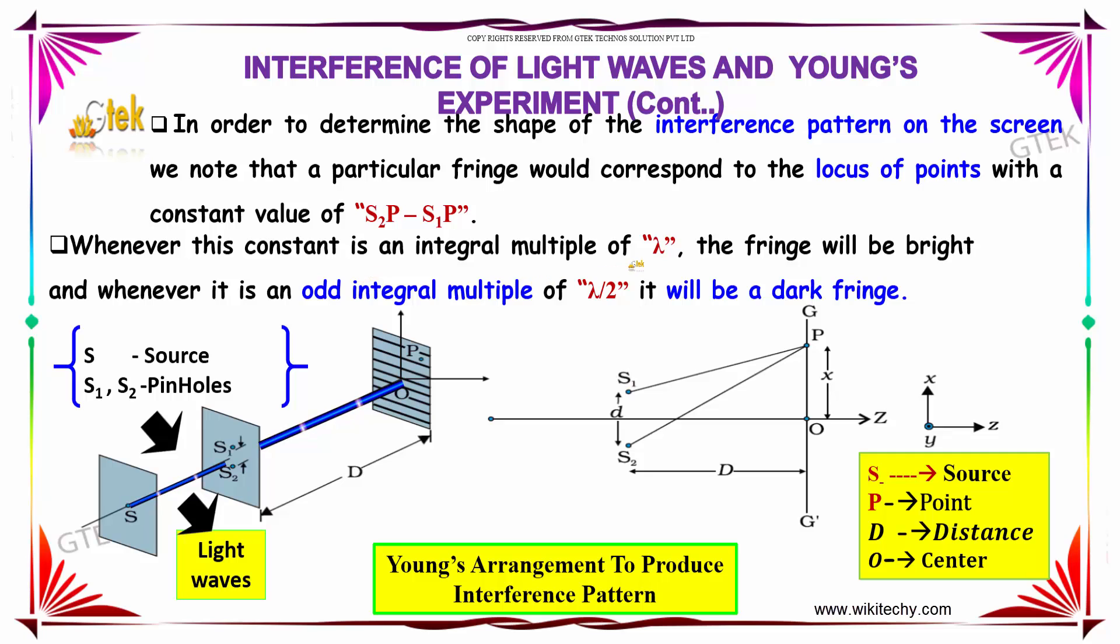Whenever this constant is an integral multiple of λ, a fringe will be bright, and whenever it is an odd integral multiple of λ/2, it will be a dark fringe.